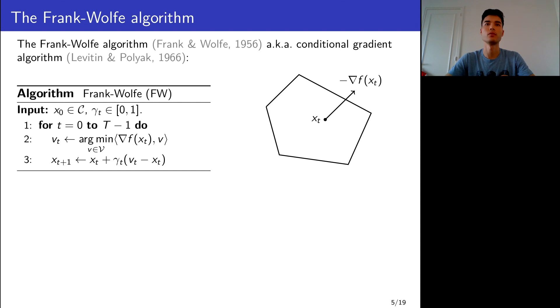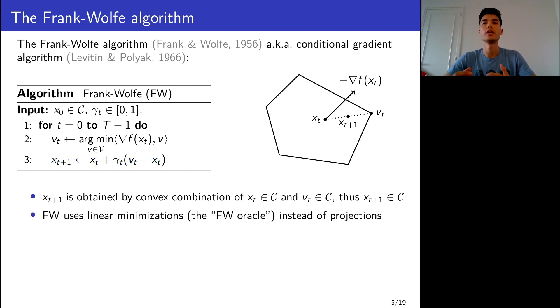This algorithm dates back to the 50s and proceeds as follows. At each iteration, you solve a linear minimization over the feasible region given by the gradient. In this case, for example, this gives you the following vertex v_t. Then you move in that direction with a step size between zero and one so that the new iterate belongs to the line segment. This shows that x_{t+1} must be feasible as well because of the convexity of C. Frank-Wolfe is able to ensure the feasibility of its iterates without ever using projections, but using linear minimizations instead.